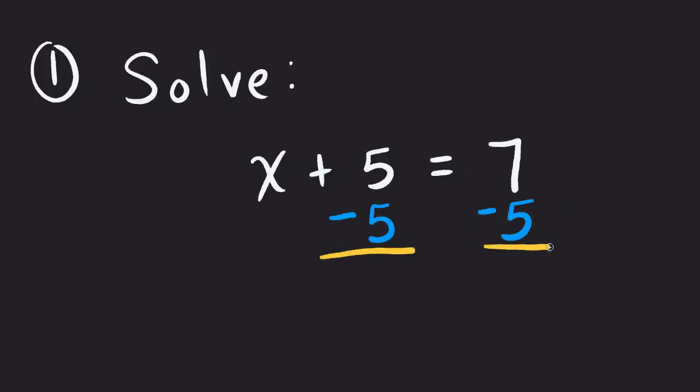So I can subtract 5 from both sides. And what that will allow me to do is this will now turn to a 0. And then this x is all left by itself now. So that means the x will just come down, and we'll get the solution over here. What's 7 minus 5? That's 2. And that's our solution.